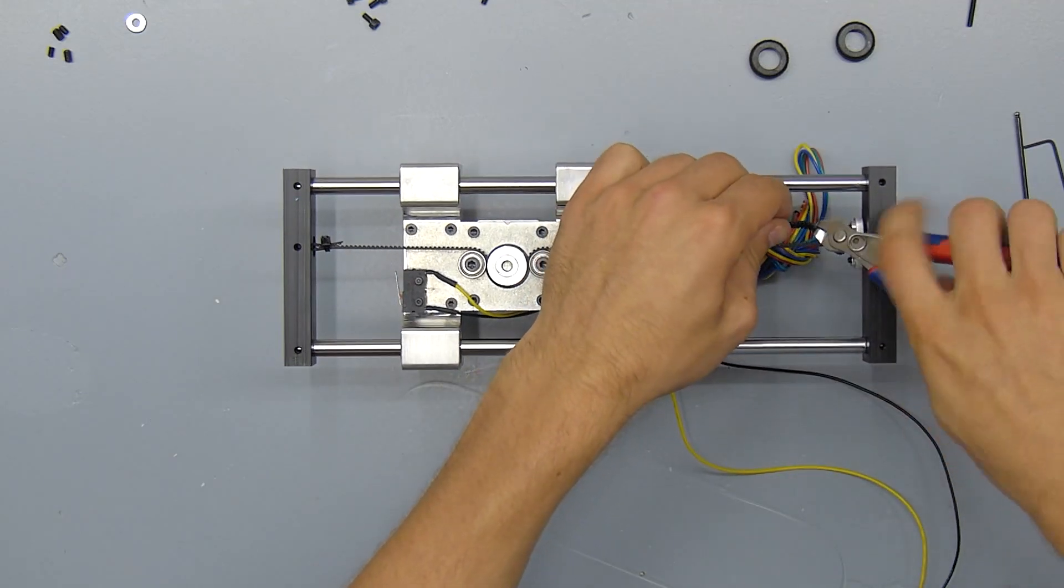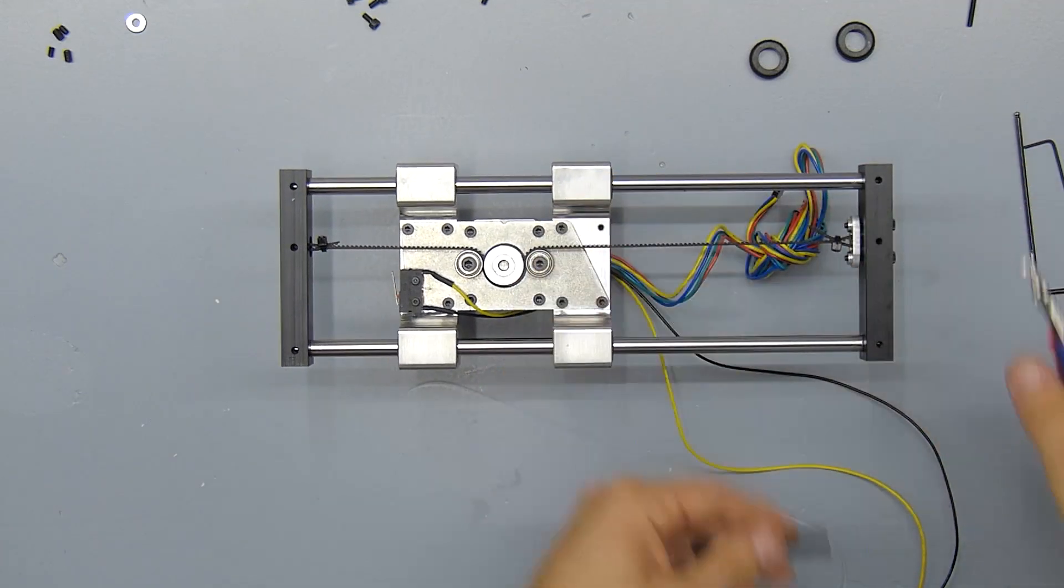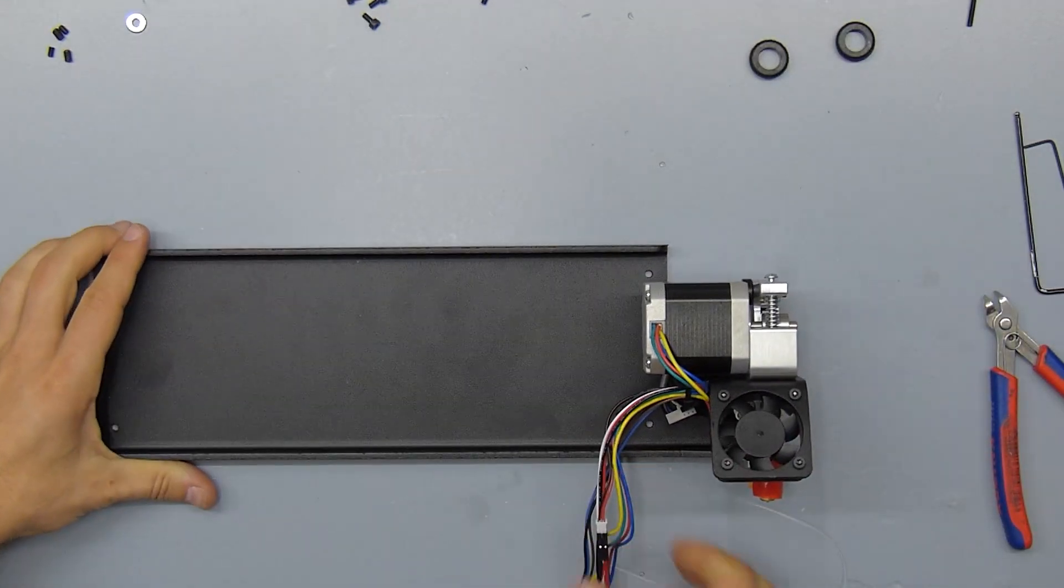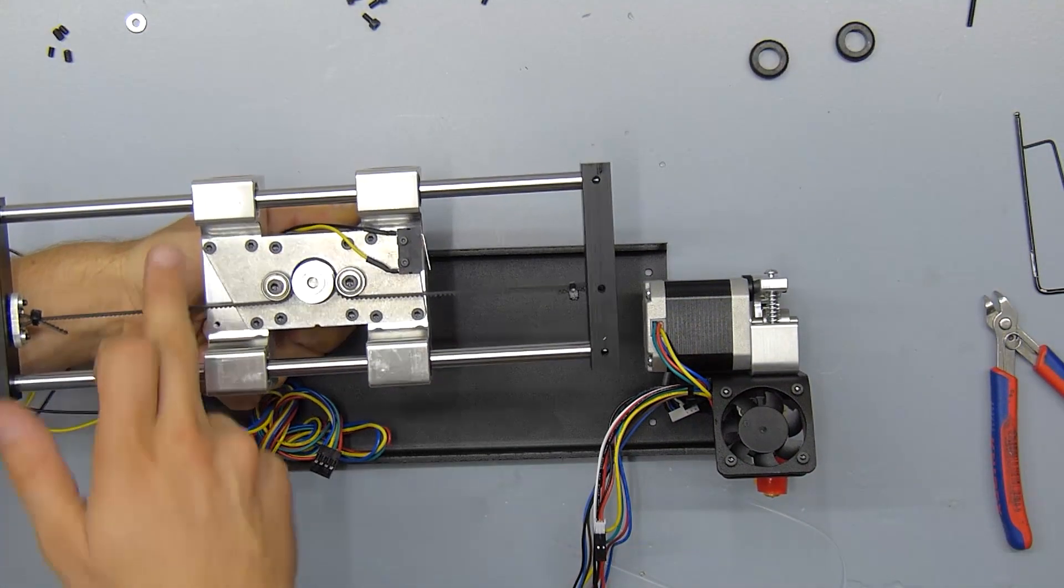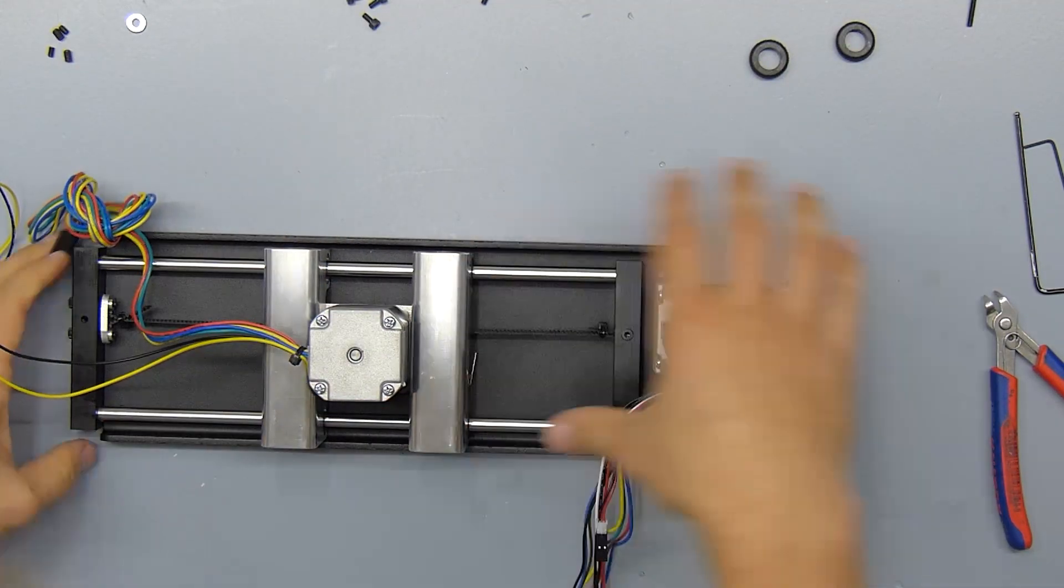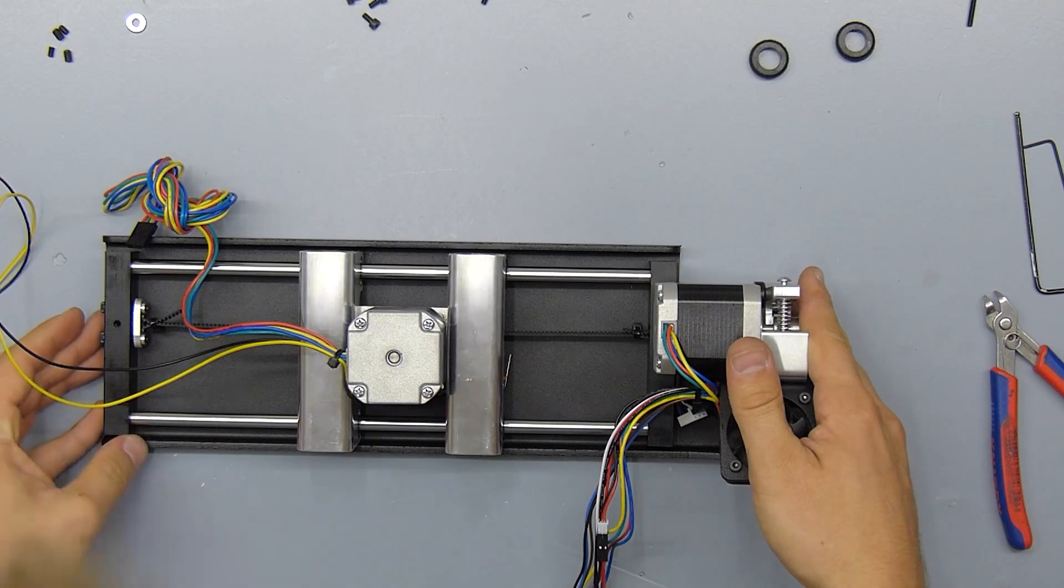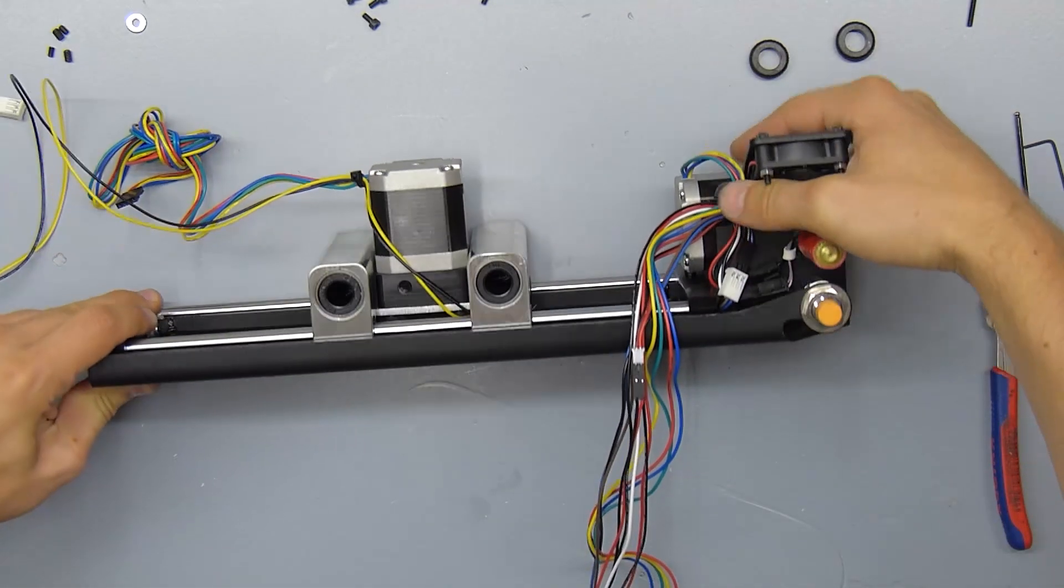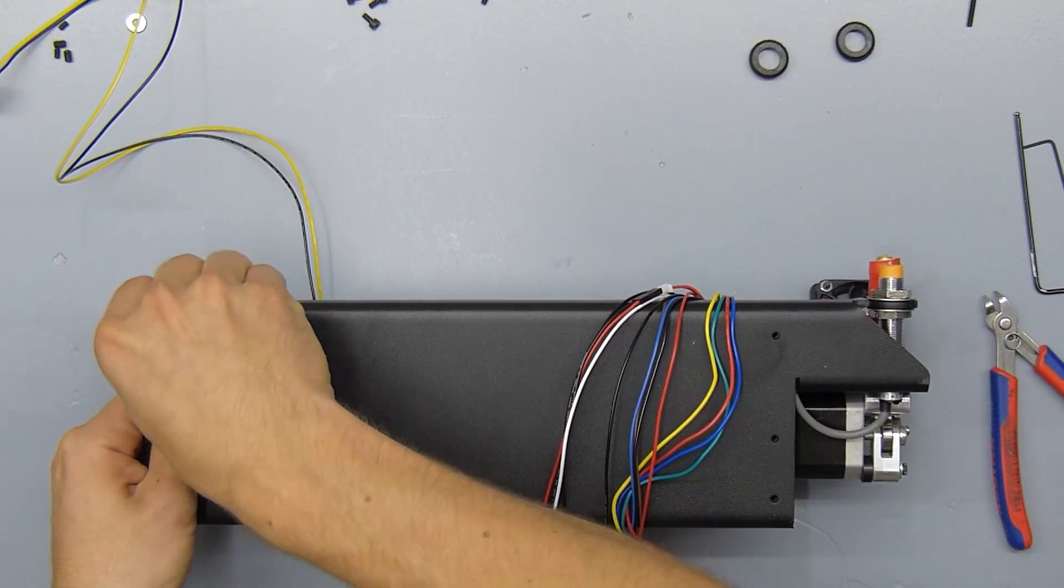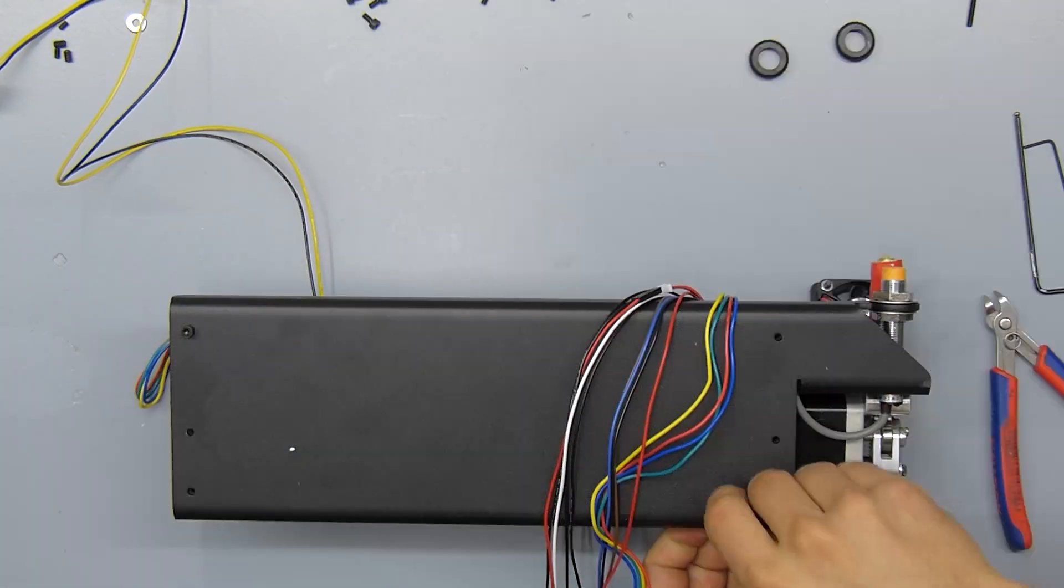Next up, we're going to attach this whole assembly onto the Y-arm. Again, the alignment is key here. Align the tipped part of the aluminum plate away from the extruder and the Y-endstop towards the extruder motor. We're going to use six 10mm M3 screws to connect these two parts.